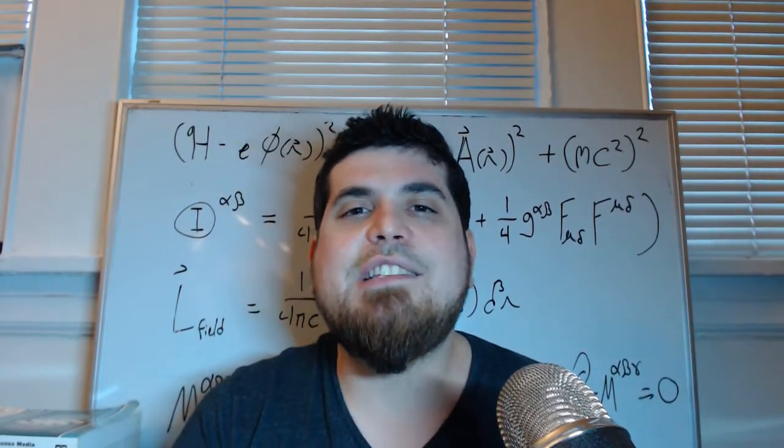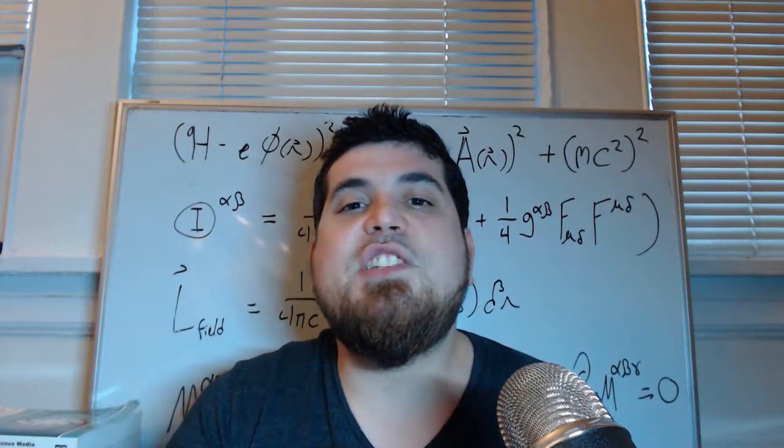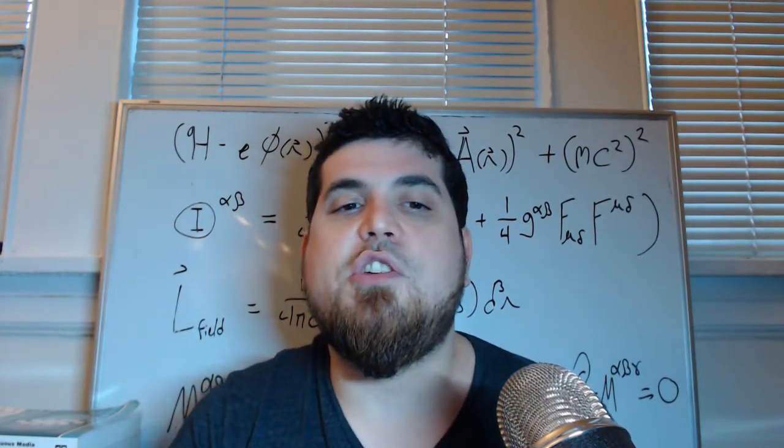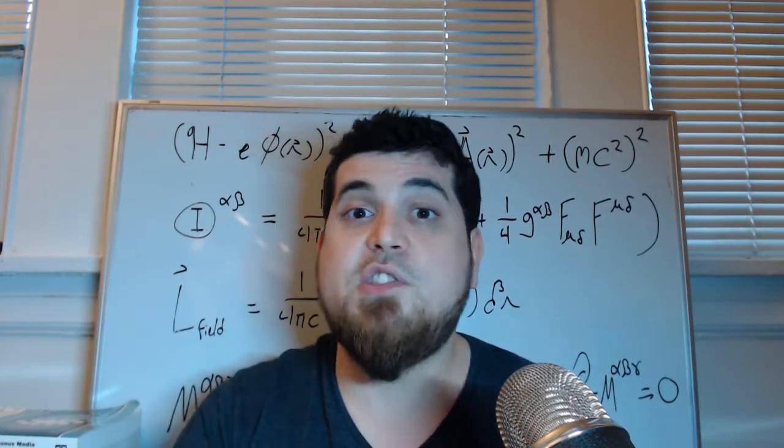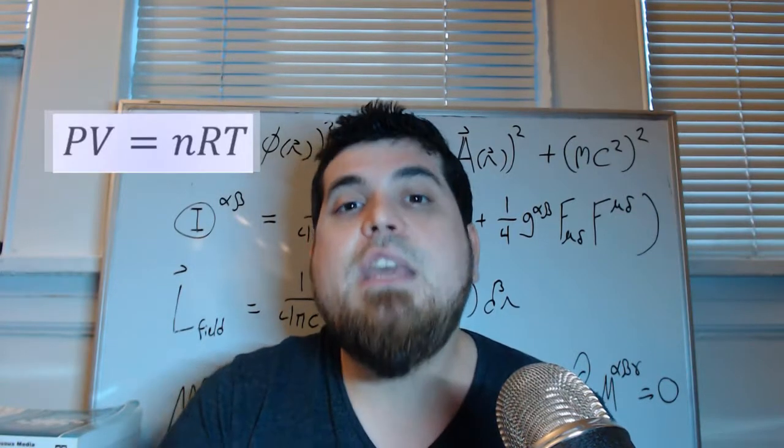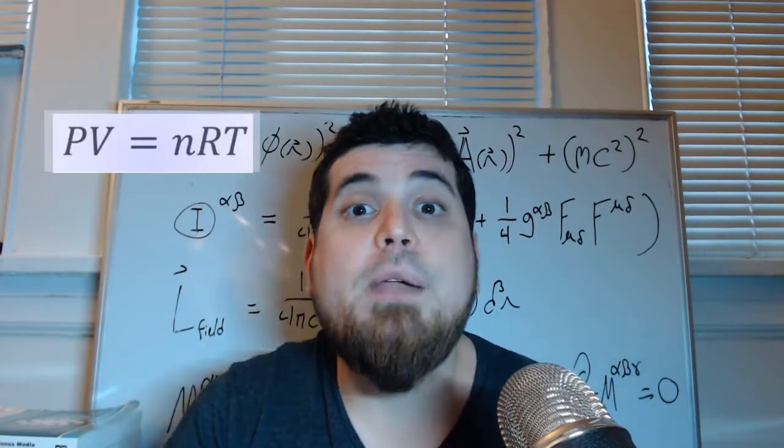You usually learn the gas laws in chemistry, and it's just this thing out of nowhere that's thrown at you, that's just assumed to be part of the subject of chemistry. PV equals nRT. So what? Why are you learning this?